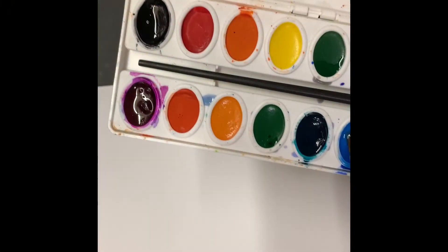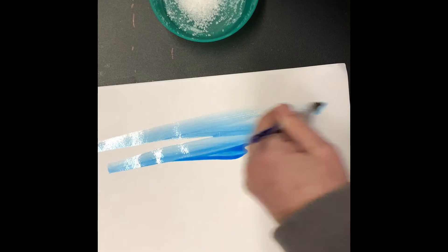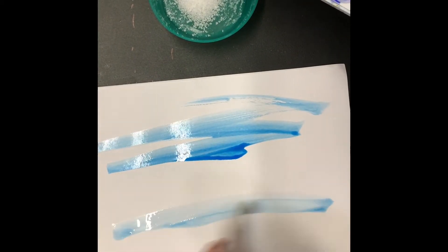Now for my cloud paper, what I'm going to do is take a piece of white paper and wet it down all the way. Then I'm going to put my paint on it, and you're going to see that in a moment.